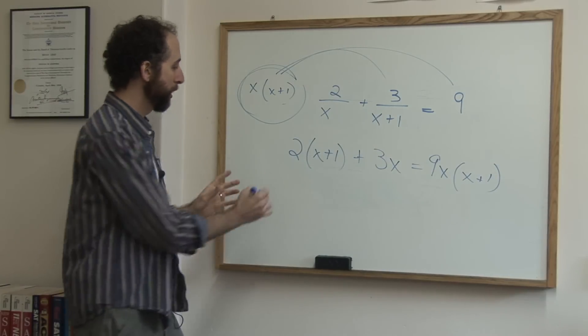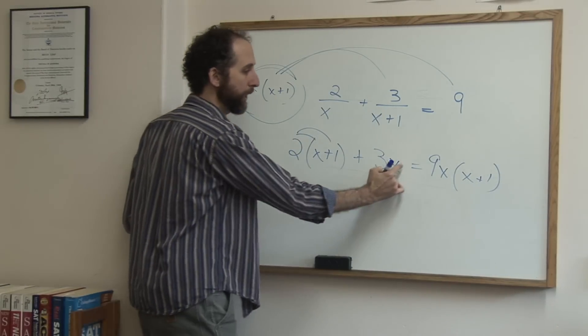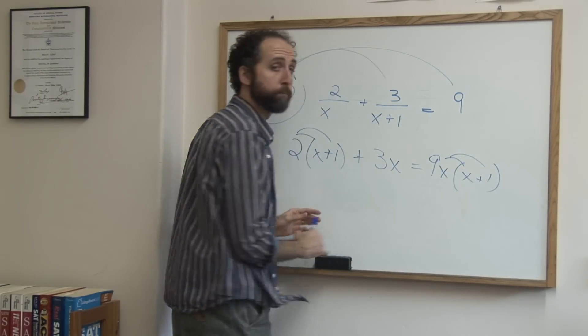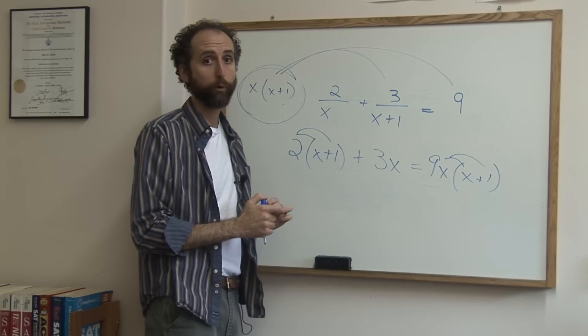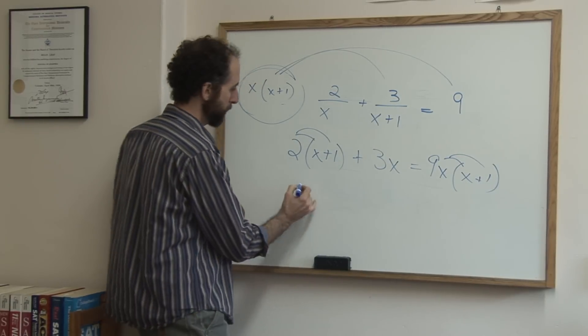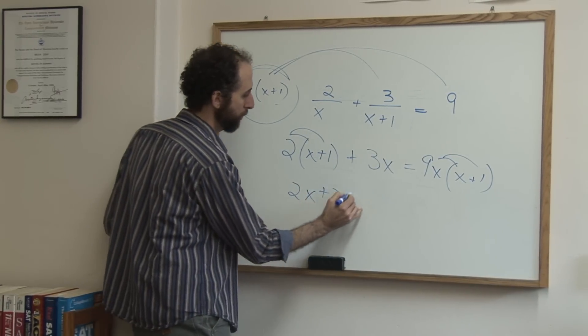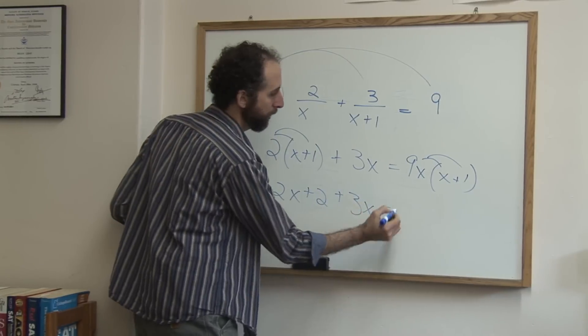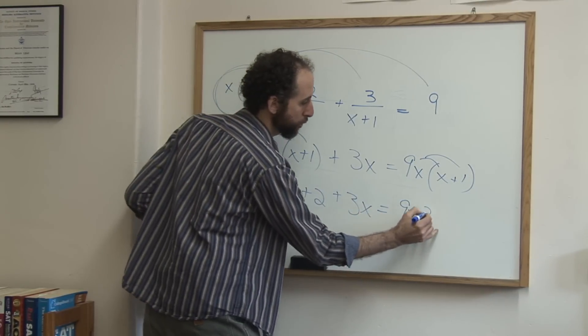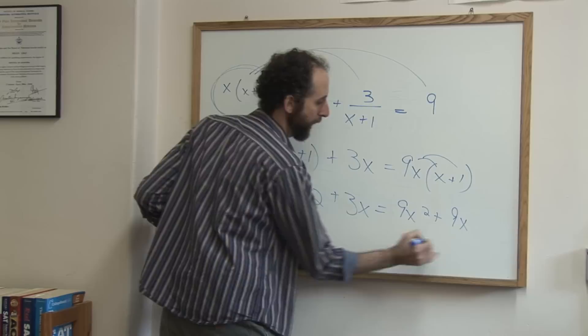Now we want to solve this. We're going to distribute, collect like terms, and then solve it just like a linear equation. I'll start it off. We have 2x plus 2 plus 3x equals 9x squared plus 9x.